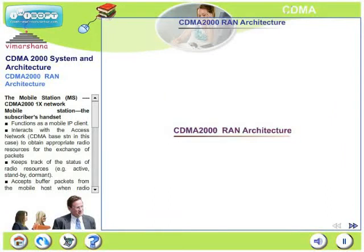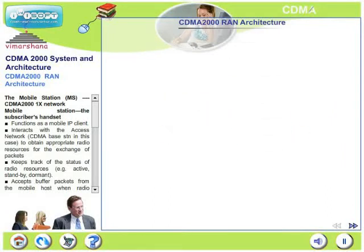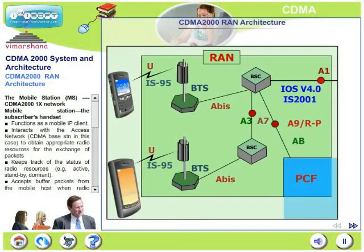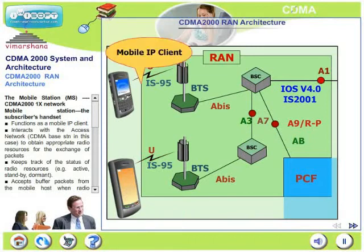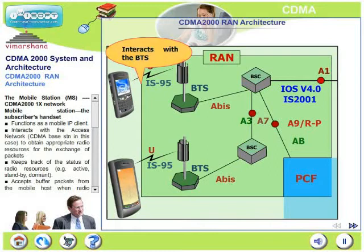In this slide we will talk about CDMA 2000 RAN architecture. Look at the figure appearing on your screen. The first element is the mobile station, which is a subscriber's handset. It functions as a mobile IP client and interacts with the access network to obtain appropriate radio resources for the exchange of packets.